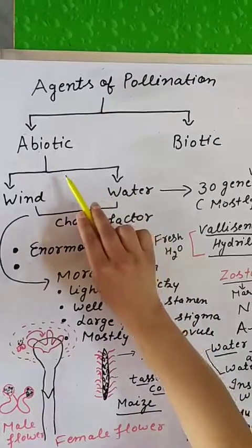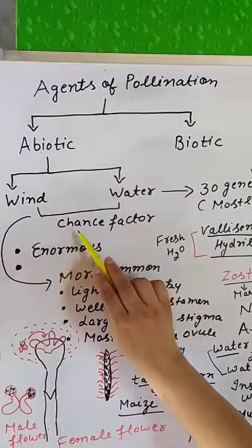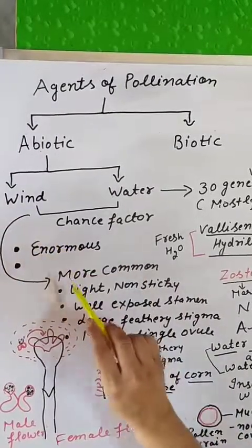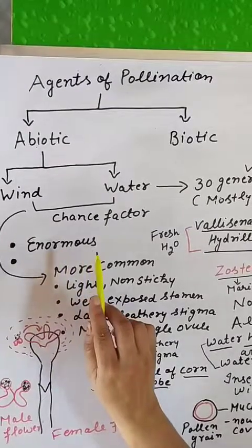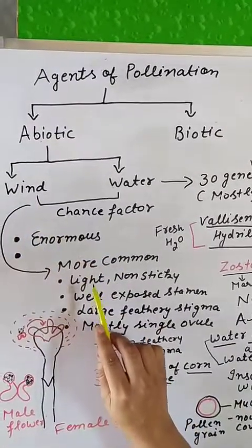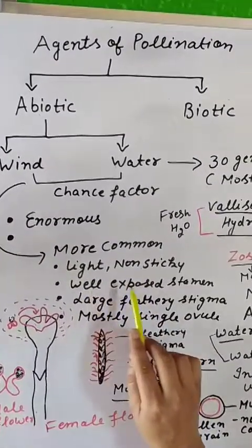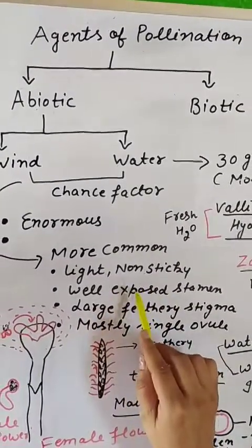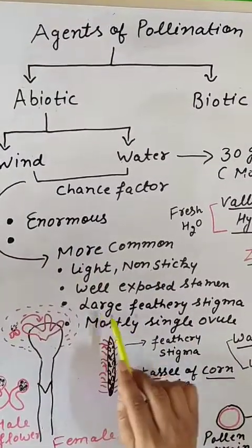In case of abiotic agents, or abiotic pollination, there is a chance factor. In case of wind pollinated flowers, pollen grains are produced in a very huge amount because there is less chance of pollination. Wind pollination is more common, and the pollen grains are light-weighted and non-sticky. Their stamen is well exposed so that the pollen grain can transfer with the help of wind current, and they have a large feathery stigma.